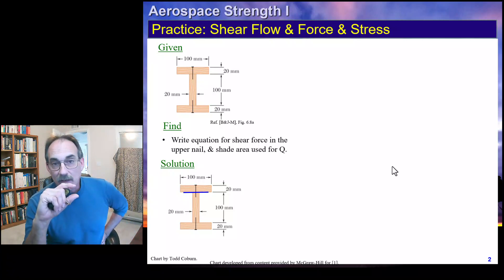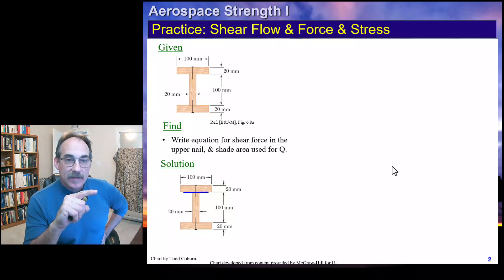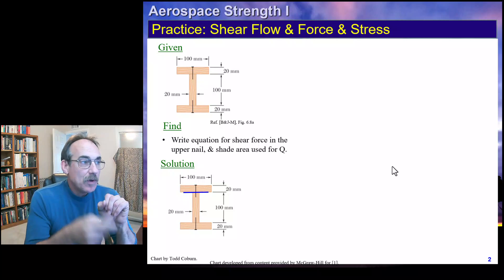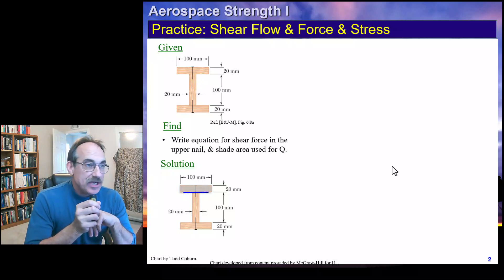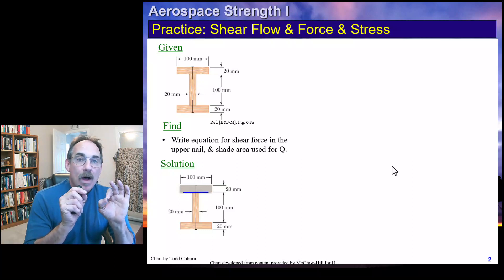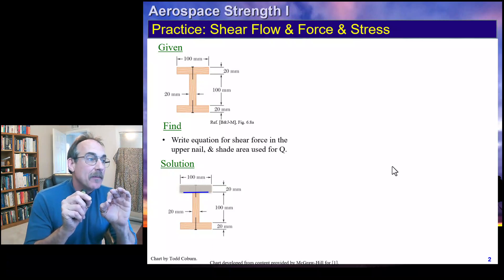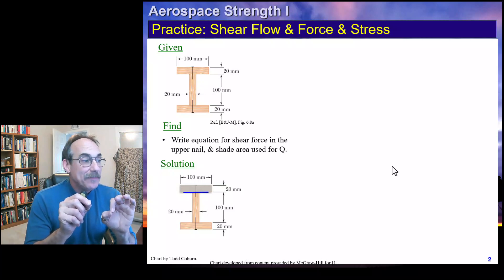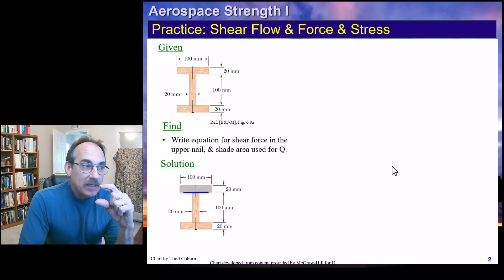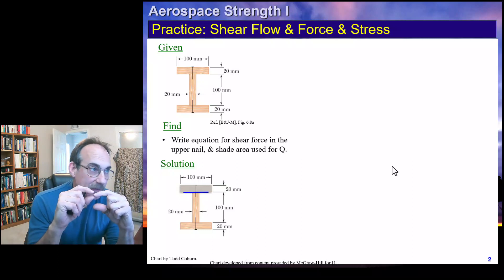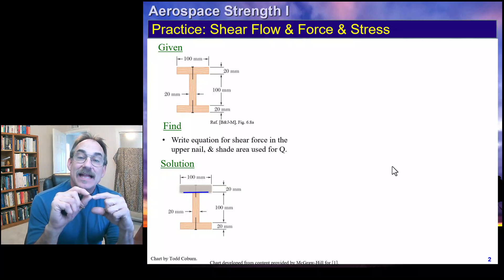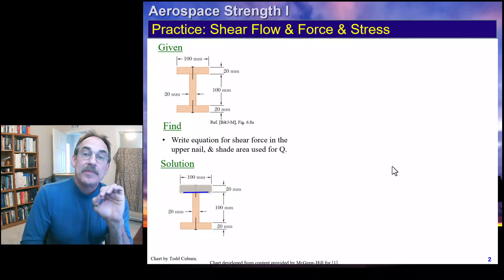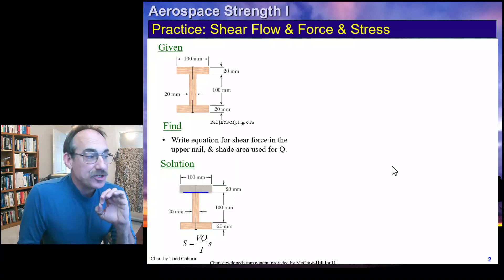The centroid of this section is at the midpoint at 50 millimeters. For the first moment of area, we calculate the area of this shaded piece: 0.1 meters times 0.02 meters. We then multiply that by 0.06 meters — that's 50 millimeters in the web plus 10 millimeters to the centroid of that piece from the centroid of the whole section. That distance times the area gives us the first moment of area Q.